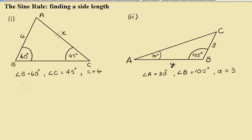Now we have to find the value of x here. So setting up the Sine Rule, we know that angle B is 60 degrees, angle C is 45, and little c across here is 4.